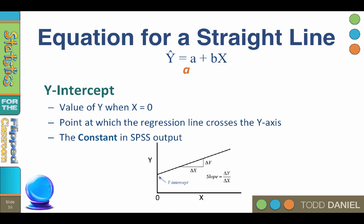When there's no correlation, the best predictor of any y value would be the mean of y. When there is a correlation, the y-intercept is our starting point, but it will not be the mean. The y-intercept, or a, is a constant in the SPSS output. On a graph, it is the point where the regression line crosses the y-axis.